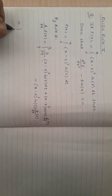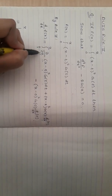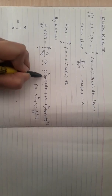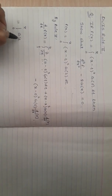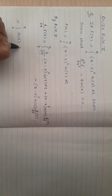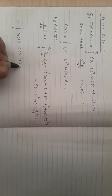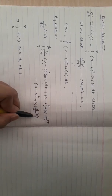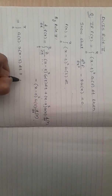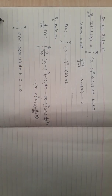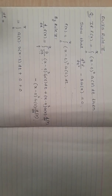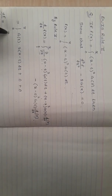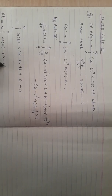Simplifying: the derivative of (x minus t) squared with respect to x, where t is constant, is 2(x minus t). So the integral term becomes the integral from 0 to x of 2(x minus t) g(t) dt. The boundary term at t = x gives (x minus x) squared = 0, and the derivative of the lower limit is also 0, so both boundary terms vanish. Therefore df/dx equals the integral from 0 to x of 2(x minus t) g(t) dt.